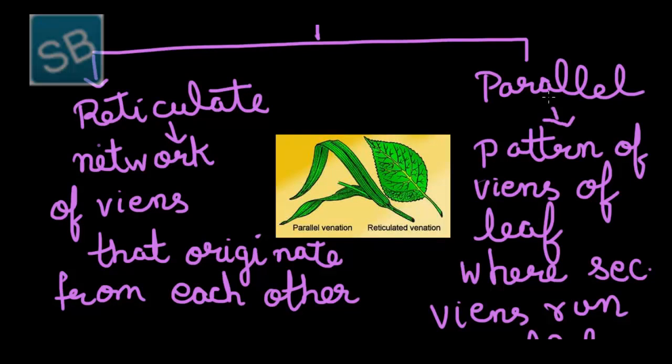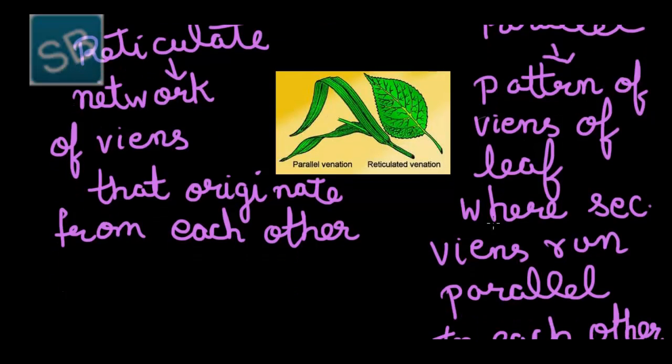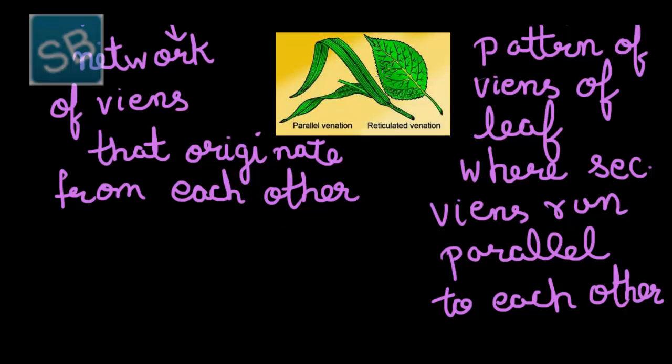On the contrary, parallel venation is a type of venation in which the pattern of veins of leaf arranges in such a manner where secondary veins run parallel to each other. Such a type of venation generally occurs in monocotyledonous plants.